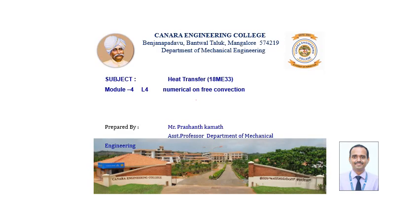In this video lecture, let us understand how the numericals are solved in the free convection problem. In the forced convection problem, we have seen numericals are solved with the help of Reynolds number. Reynolds number has been replaced by the Grashof and Prandtl number in the case of free convection. The procedure involves finding out properties, then using the correlation for the Nusselt number and the h value, then finding Q = h·A·ΔT, where h is the convective transfer coefficient, A is the surface area, and ΔT is the temperature difference between the surface and the surrounding.